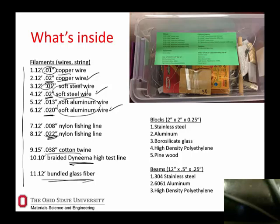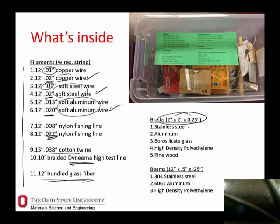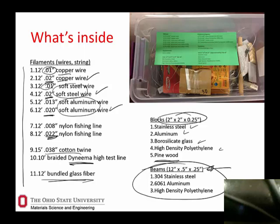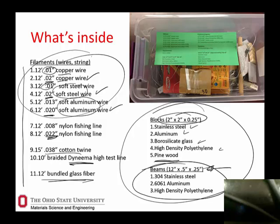We also have blocks and beams, all cut to the same size on purpose so that we can compare density and thermal conductivity — and we also have wood in there. You can rank order these things or force students to do math by changing sizes. With the beams — also chosen to the same diameter — we can ask how things rank order in stiffness. Wire is really cheap so we can get more, whereas the blocks and beams aren't quite as cheap.